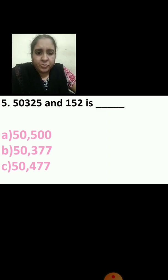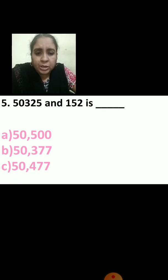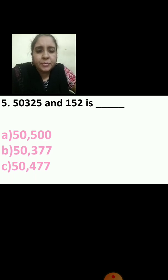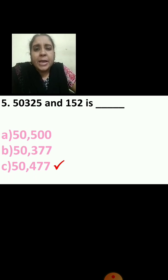We will see the 5th question: 50,325 plus 152 is dash. The options are 50,500; 50,377; or 50,477. Add and find out the answer. The correct answer is 50,477. What is the correct answer, children? 50,477.